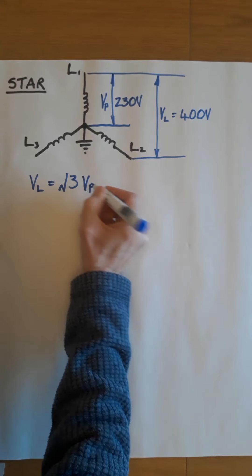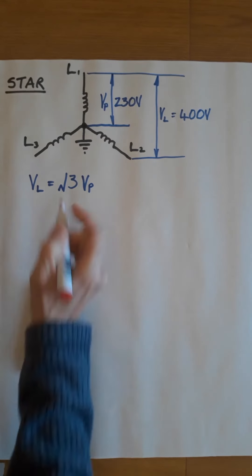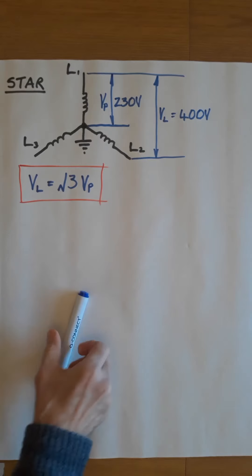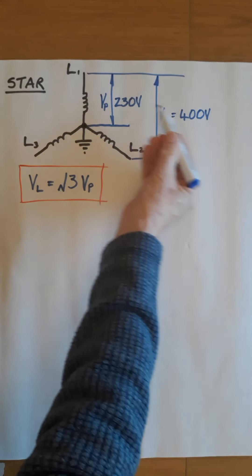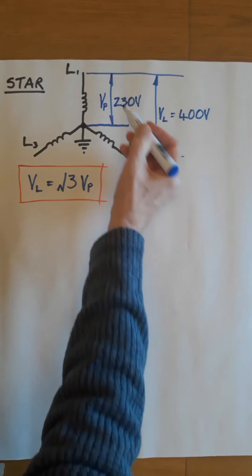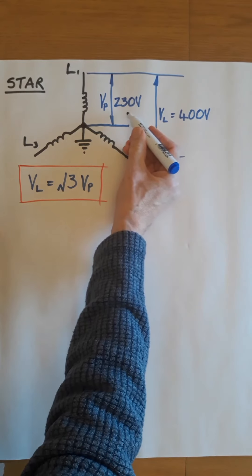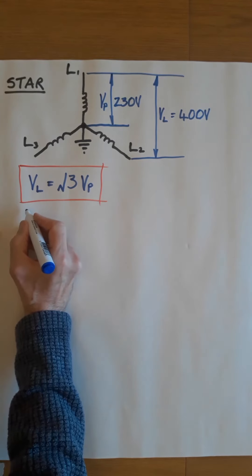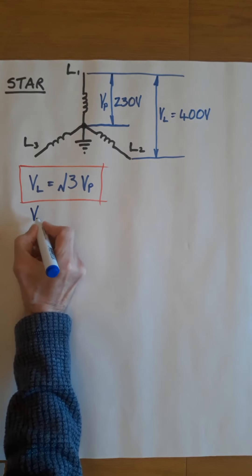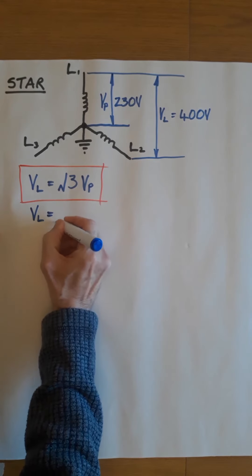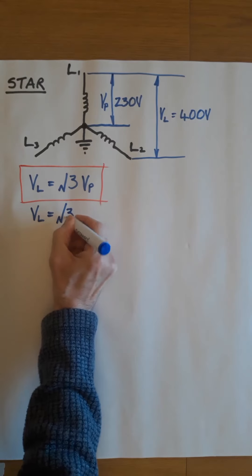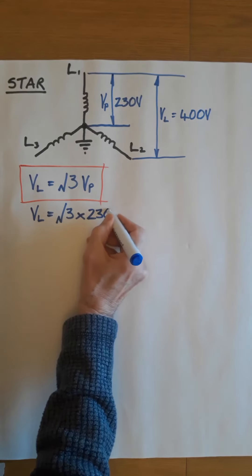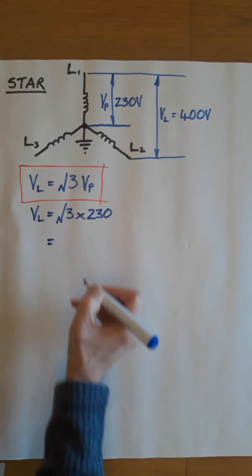This is a formula to remember; this is important. So if we were to just use these numbers, if I know that our phase voltage is 230, I should be able to calculate the line voltage. So let's do that now. VL equals root 3 times 230. If you put that in your calculator and work it out...